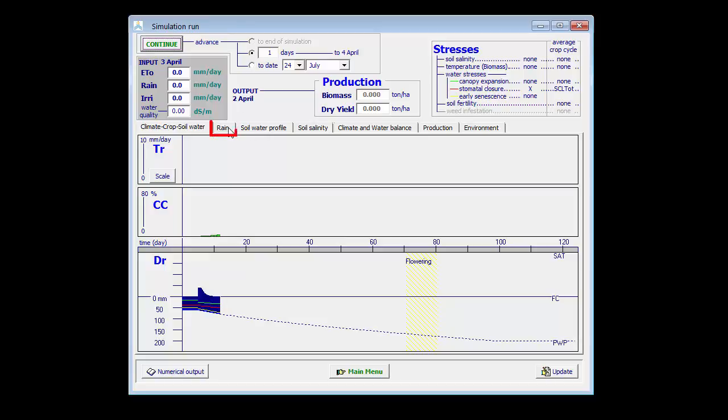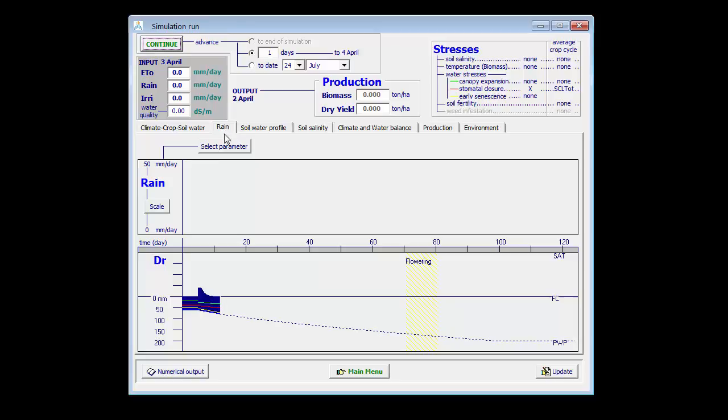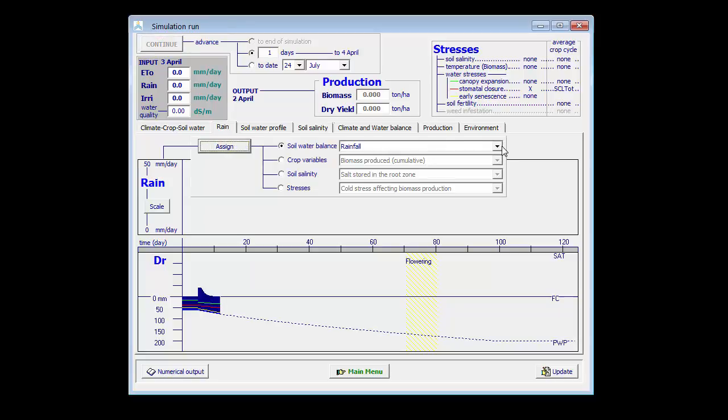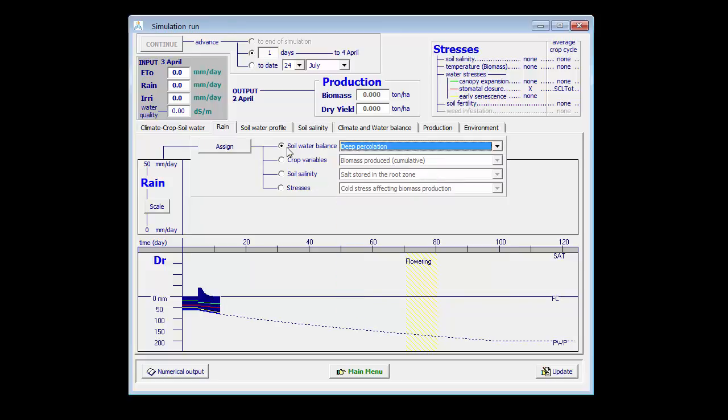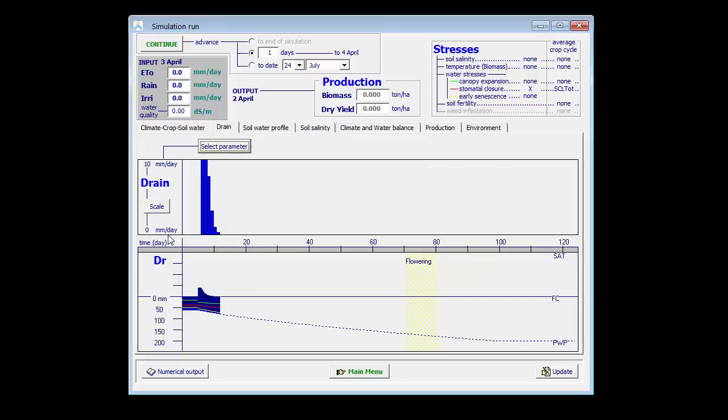I can see that here in the second tab sheet, which for the moment is indicated as rain. When I select that tab sheet and change the parameters to deep percolation, which is a parameter of the soil water balance, and I assign it, I can see that there was drainage on those days.